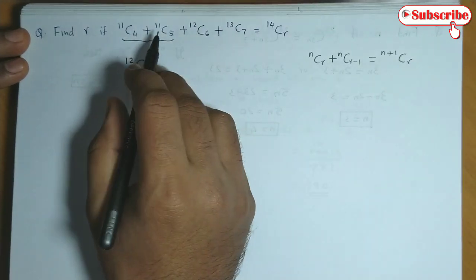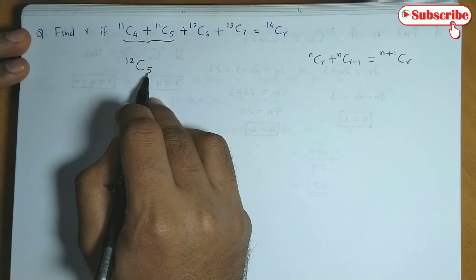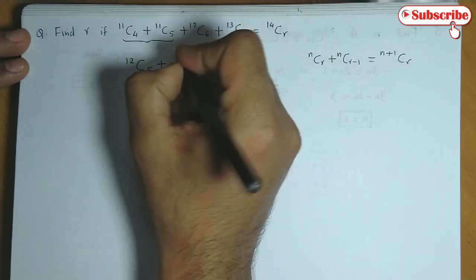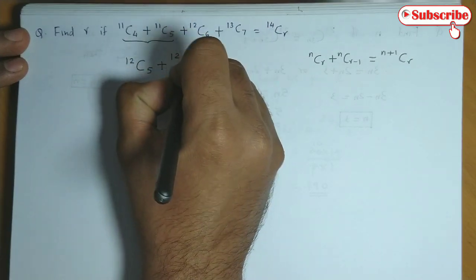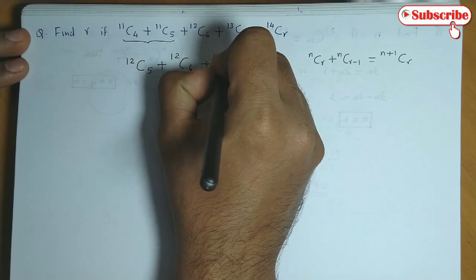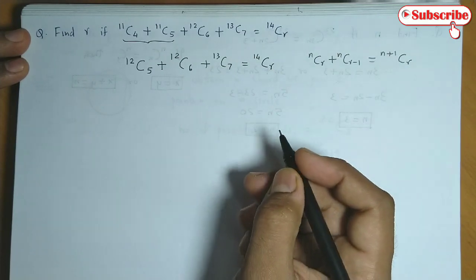Right? So whichever is greater, 4 or 5, 5 is greater. So we write down 5 plus the remaining combinations. So you have 12C5 plus 12C6 plus 13C7 is equal to 14CR.